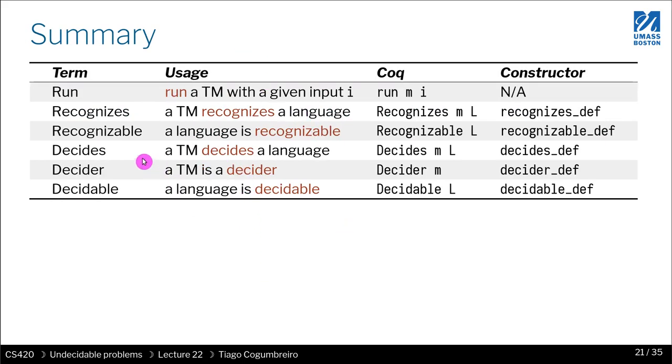So to summarize, we have these concepts. We have the notion of running a Turing machine. And in Coq, we use function run with two parameters, the machine and the input. And then we have recognizes. And we say that a Turing machine recognizes a language. We have recognizable, and that refers to a language. We say that a language is recognizable.